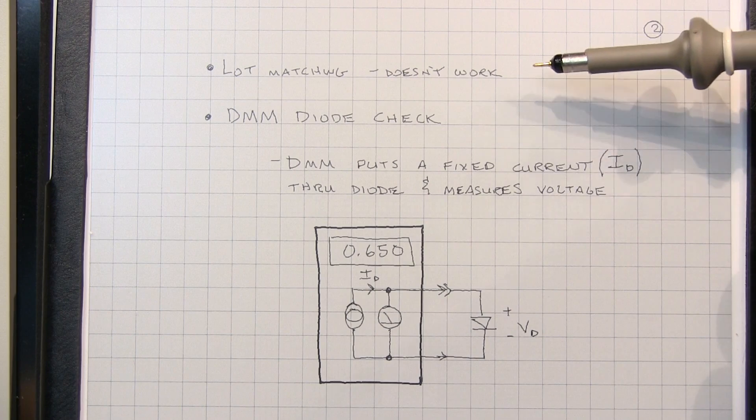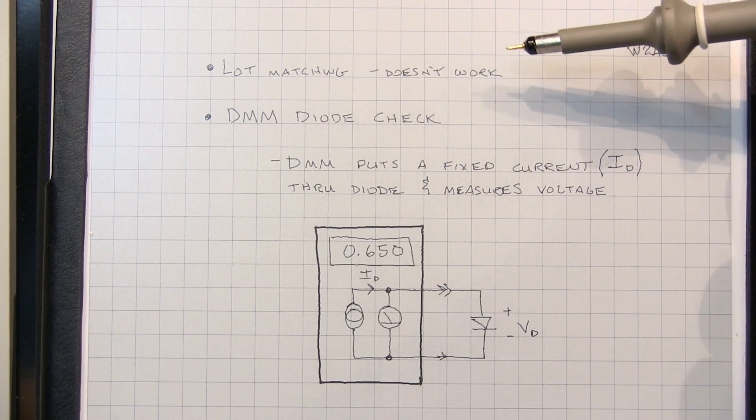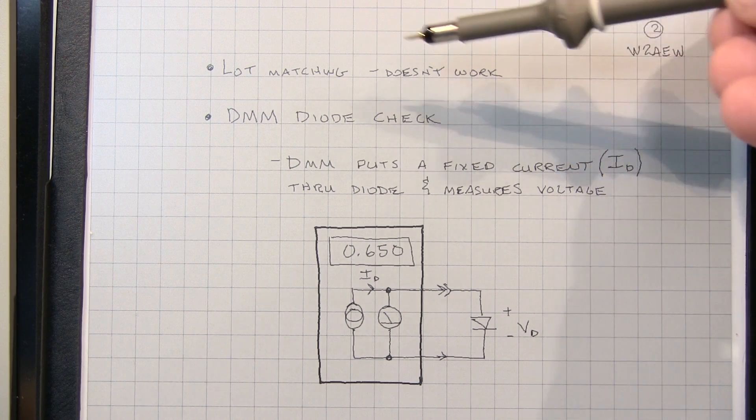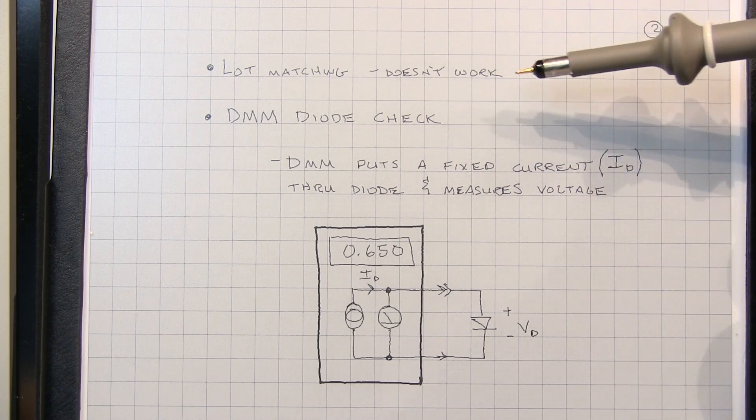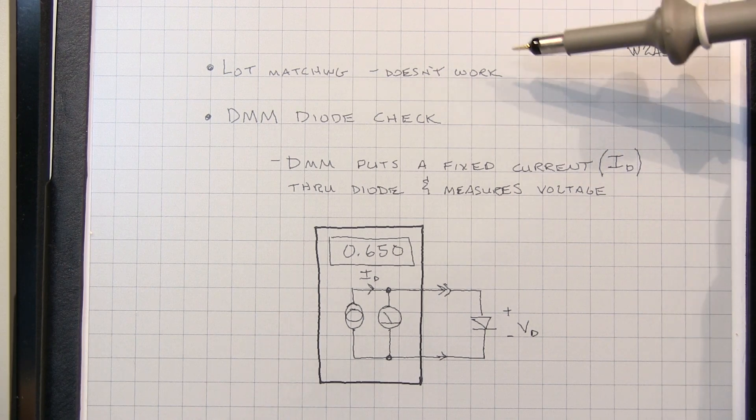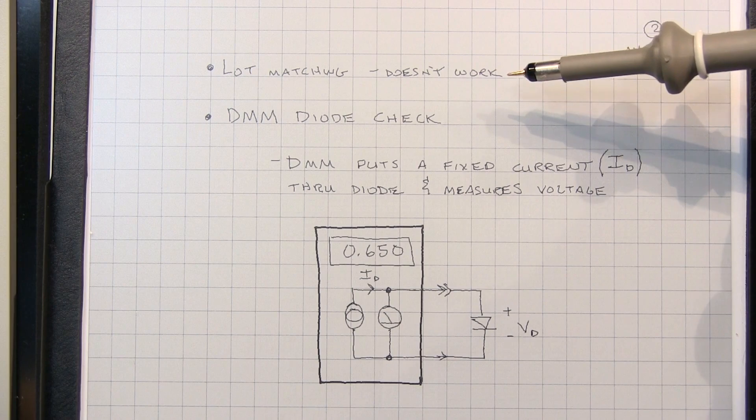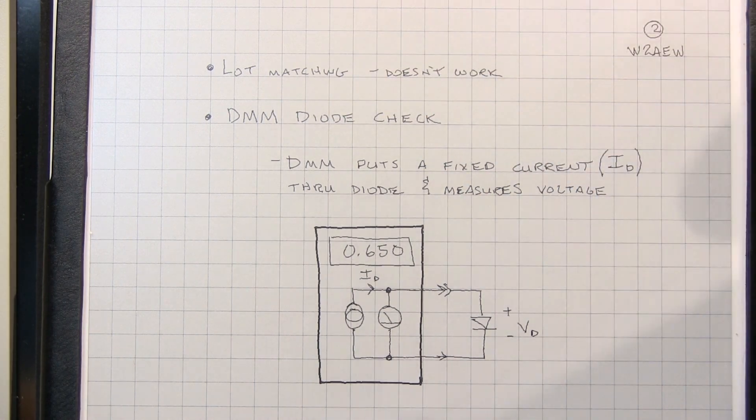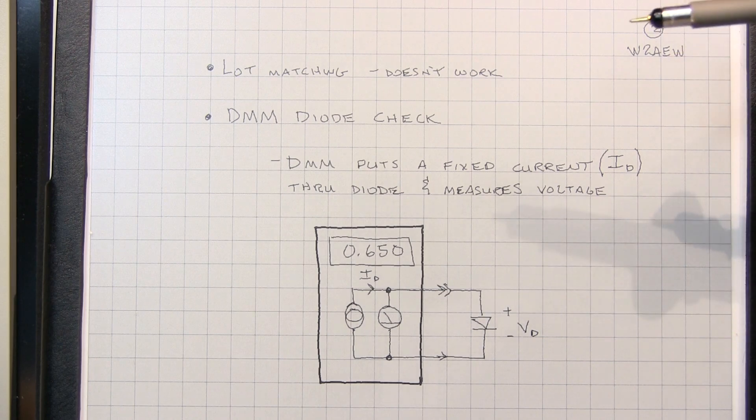So the first one is lot matching, and I'll say that it generally doesn't work. You can oftentimes find diodes that are matched pretty well within a manufacturing lot, but there's really no guarantee, because even the stresses of packaging the devices and things like that can oftentimes change the diode characteristics. So I would say in general you don't really want to use just simple lot number matching to match diodes.